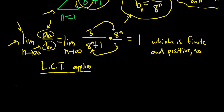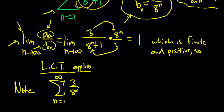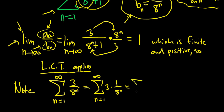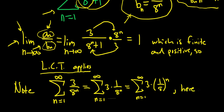Now we have to look at the sum of the b's. This sum, starting at one to infinity of three over eight to the n, can be rewritten as three times one over eight to the n, which is three times one over eight to the n — a geometric series. This is a convergent geometric series because r equals one eighth, and the absolute value of that is one eighth, which is less than one. So it converges by the geometric series test.